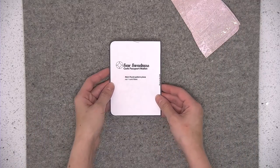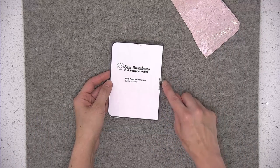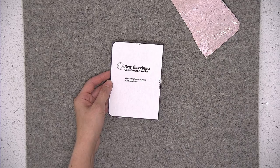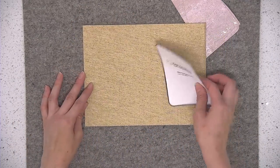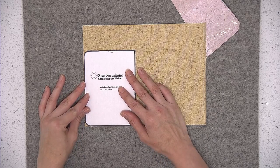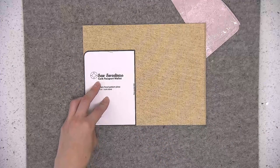Let me show you how to cut out the main panel piece. This needs to be placed on the fold of the fabric and with cork fabric I generally don't like to fold it because it creates a crease. So let me show you how I cut out my cork pieces that need to be cut on the fold.